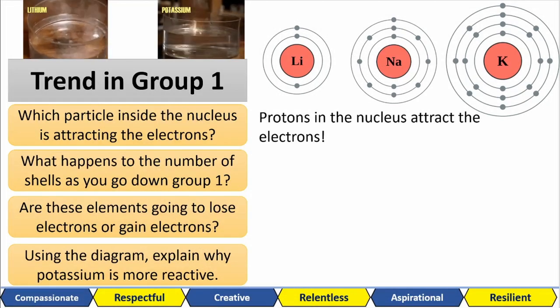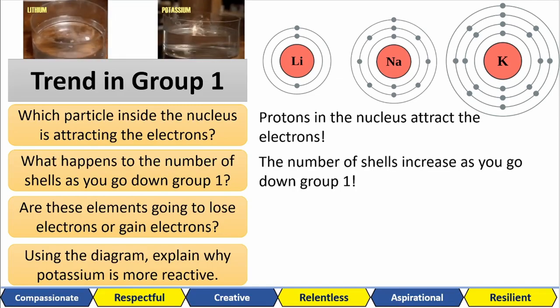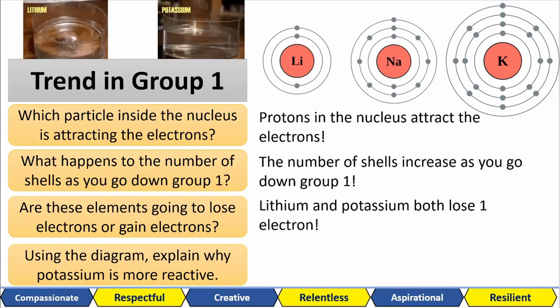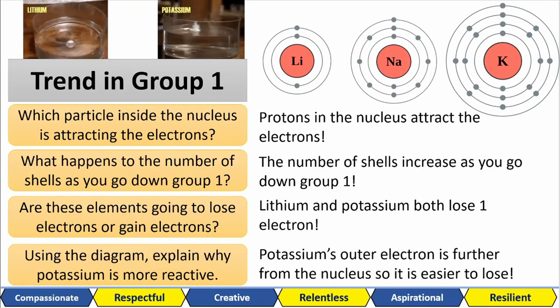It's the protons in the nucleus that are attracted to the electrons. The number of shells increases as you go down group 1. Lithium and potassium are both going to lose that one outer shell electron to form a stable configuration. Remember in my video on noble gases? Everyone wants to be a noble gas. And then finally, potassium's outer electrons is further away from the nucleus. So it's easier for it to lose. That's why it's easier for it to react. It's losing that electron very, very easily compared to lithium.